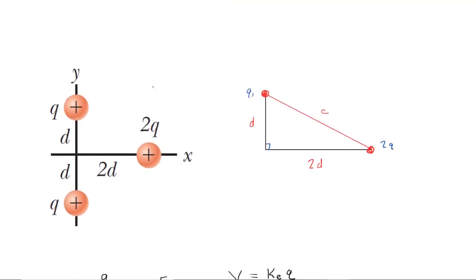Let's come down and magnify the diagram. The location of interest is right here, so we're trying to calculate the total electric potential at this point. We need to figure out the distance from each charge to that location. By the symmetry of the picture, the distance from the upper charge and the distance from the lower charge to that same location will be the same. We've redrawn the picture and will use the Pythagorean theorem to solve for the distance.